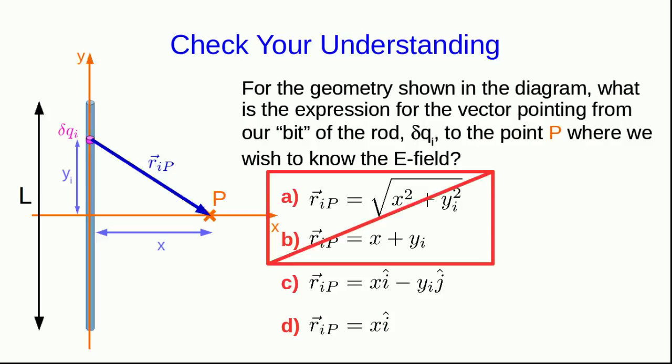Hopefully you know that A and B can't possibly be correct, because those expressions are not vectors, and r_IP vector is certainly a vector, and so A and B can't be right.